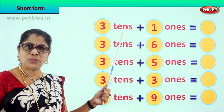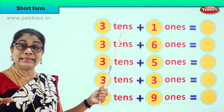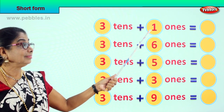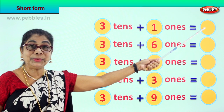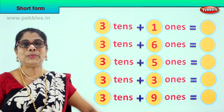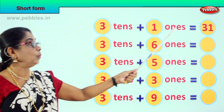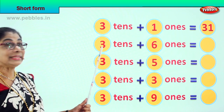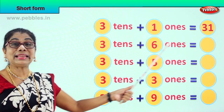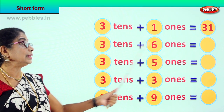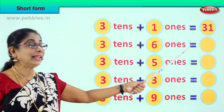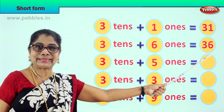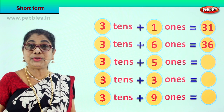Let's take another exercise. See what we have here. Three tens — what is three tens? One ten, two tens, three tens — three tens are 30. Three tens plus one one is equal to thirty plus one, equals 31. Three tens plus six ones — that is thirty plus six — three tens plus six ones is equal to 36.